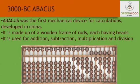What is Abacus? Abacus was the first mechanical device for calculations, developed in China. It was made up of a wooden frame with rods, each having beads. It is used for addition, subtraction, multiplication, and division.